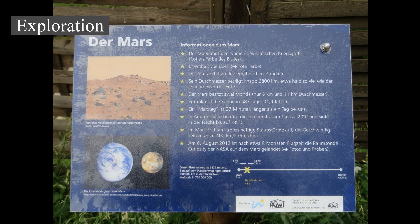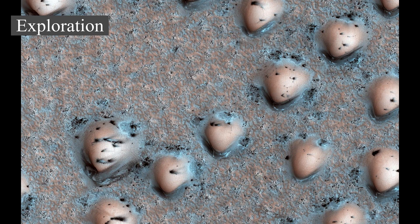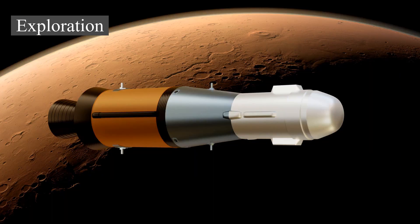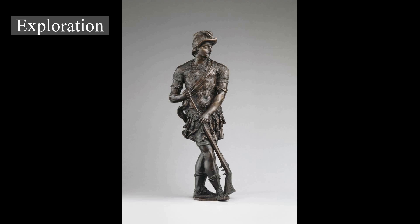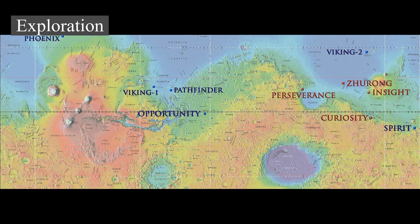As of 2022, Mars is host to 14 functioning spacecraft: eight in orbit — 2001 Mars Odyssey, Mars Express, Mars Reconnaissance Orbiter, MAVEN, ExoMars Trace Gas Orbiter, the Hope Orbiter, and the Tianwen-1 orbiter — and six on the surface: the InSight lander, the Curiosity rover, the Perseverance rover, the Ingenuity helicopter, the Tianwen-1 lander, and the Zhurong rover. Planned missions include the Rosalind Franklin rover, repeatedly delayed to a launch date of 2024 at the earliest and more likely 2028, and a joint NASA–ESA mission to return samples from Mars planned to launch in 2026.